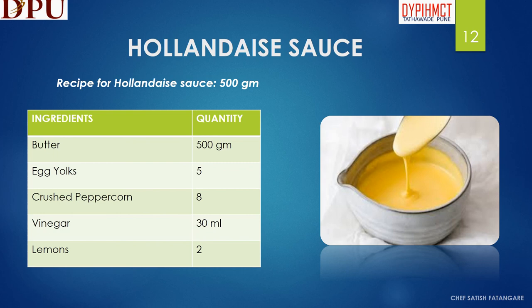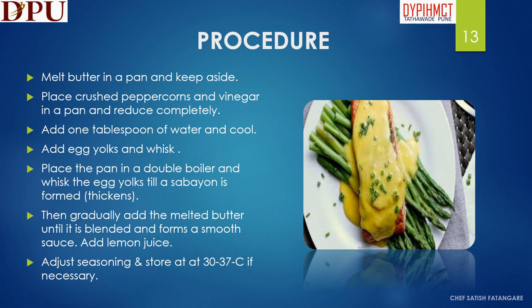In this slide we will discuss about the hollandaise sauce. The ingredients required to prepare hollandaise sauce are butter, egg yolks, crushed peppercorns, vinegar and lemons. To prepare hollandaise sauce: melt the butter in a pan and keep aside. Place crushed peppercorns and vinegar in a pan and reduce completely. Add 1 tablespoon of water and cool. Add egg yolks and whisk. Place the pan in a double boiler and whisk the egg yolks till a sabayon is formed or it gets thick. Then gradually add the melted butter until it is blended and forms a smooth sauce. Add lemon juice. Adjust seasoning and store at 30 to 37 degrees Celsius if necessary.